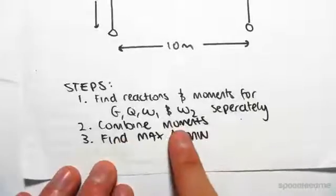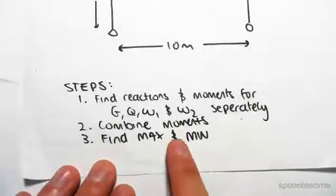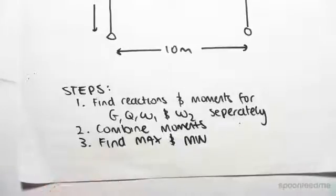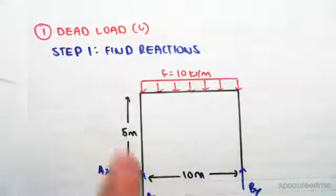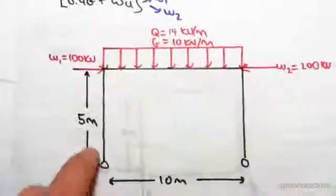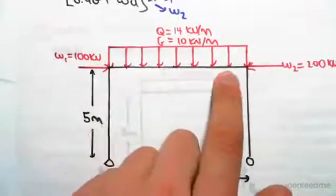Then we're going to find the maximum and minimum from those combinations. So if we first start with the dead load, what I've done is drawn here we're looking at dead load. Step one is finding the reactions, so I've taken our frame and just isolated out the dead load of 10 kilonewtons per meter.